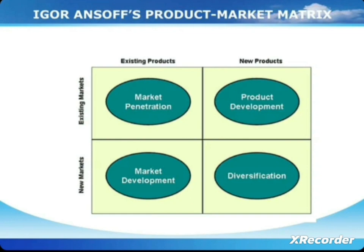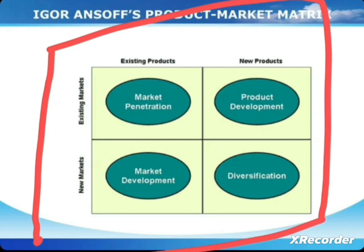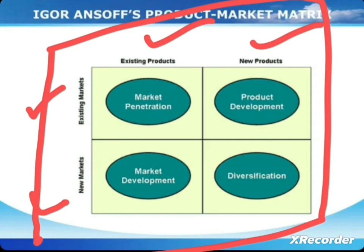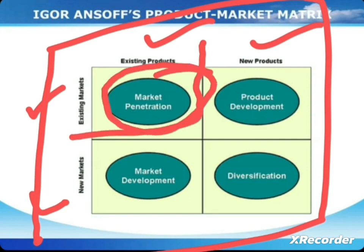For these concentration strategies, there is a model called the Ansoff Product-Market Matrix. On the horizontal line are existing products and new products, and on the vertical line are new markets and existing markets. If a company wants to work on an existing product with an existing market, that quadrant is called market penetration.